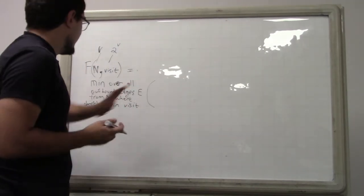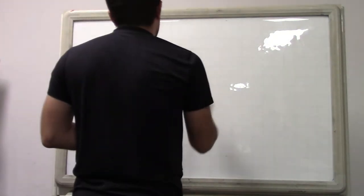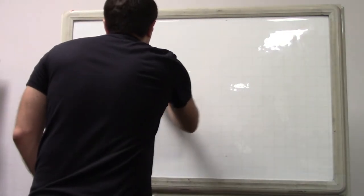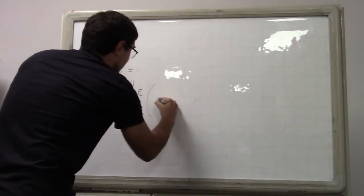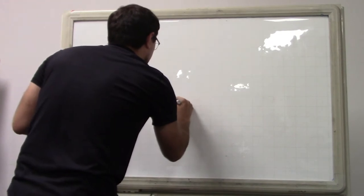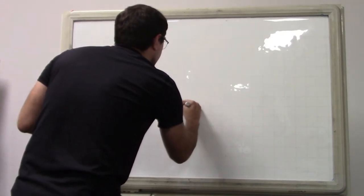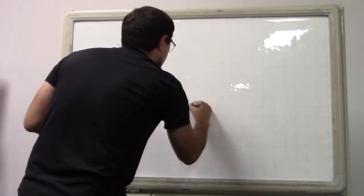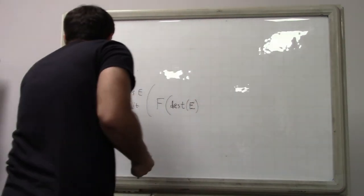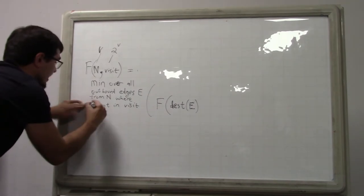And what is the function we want to minimize here? Well, we will do F of... Well, we will go to the destination of the edge, right? Our location will be updated to the destination of the edge. Maybe I should write it as E dot destination.